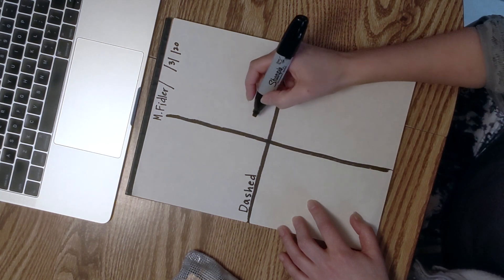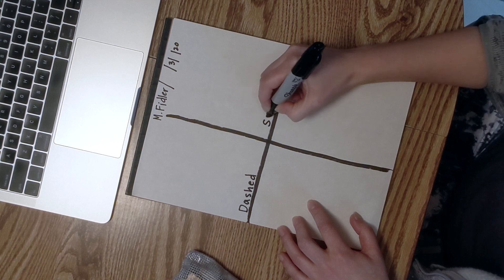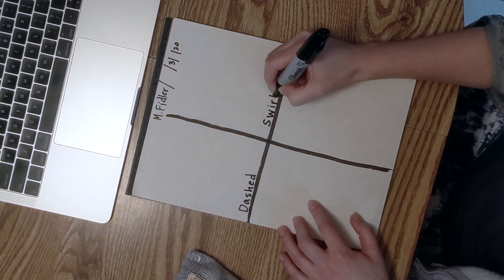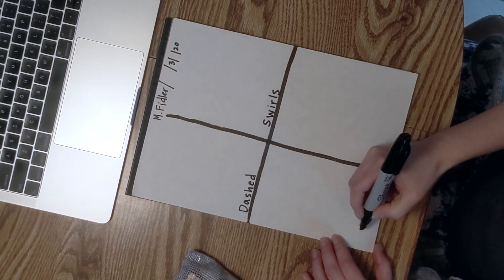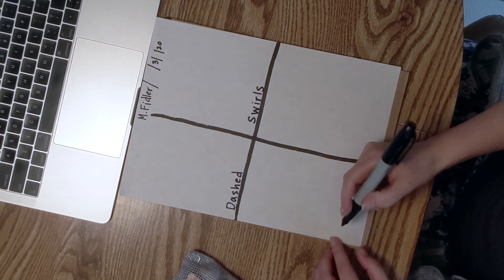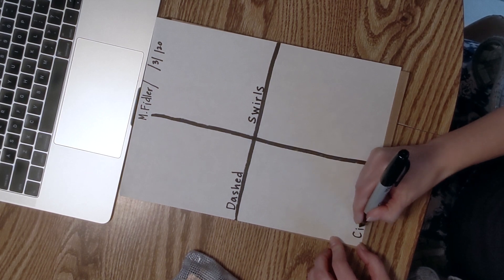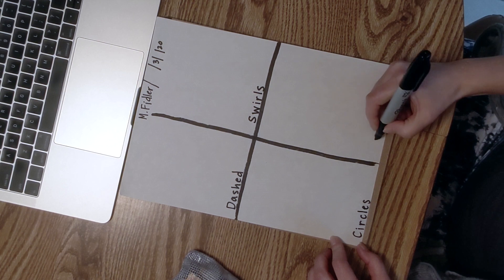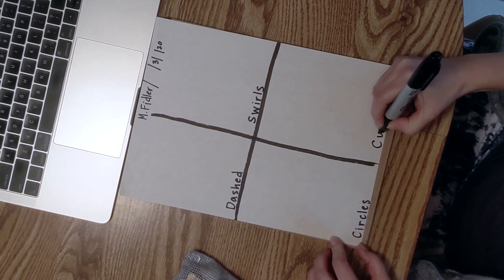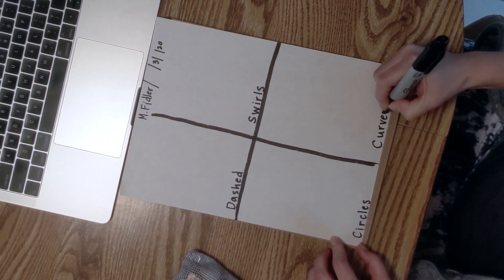In the next one, we're going to write swirls, S-W-I-R-L-S. And this one, we're going to make circles, C-I-R-C-L-E-S. And finally curves, C-U-R-V-E-S.